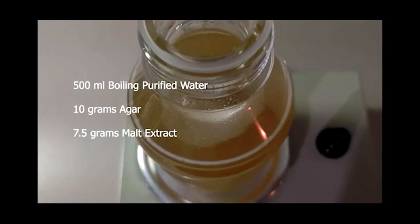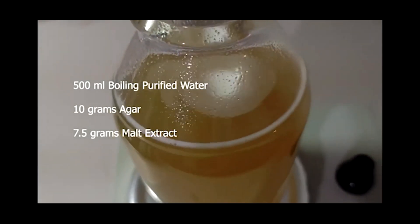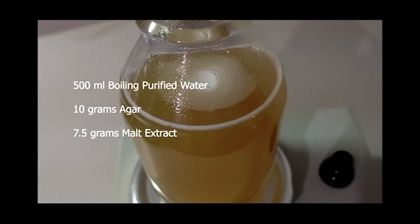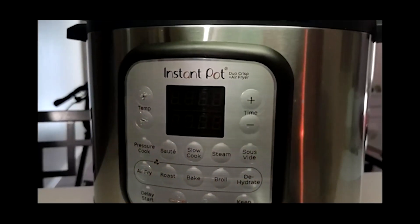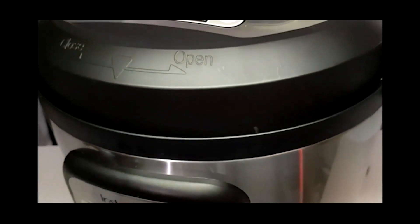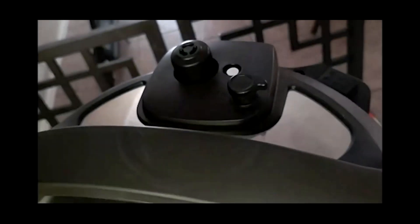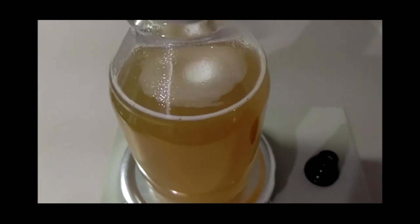Using 500 milliliters of boiling, purified, or distilled water, mix 10 grams of agar and 7.5 grams of malt extract. Pressure cook for no longer than 20 minutes at 15 PSI so you don't caramelize the sugars or overcook the nutrients. Allow the MEA to cool between 120 and 140 degrees, then you're ready to pour.